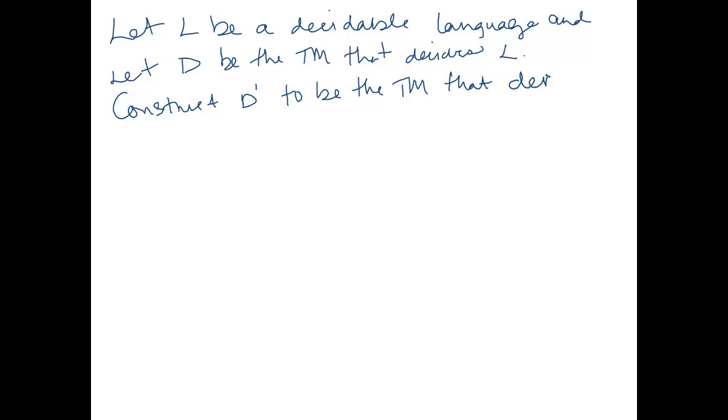L complement. Okay, so what does D prime do? It says on input W, we know that D exists. D is the decider for L. We are going to run D on W. It's going to say yes, that string is in L. If D accepts W, reject. If D comes back and says yep, W is in L, then we say okay, then it's definitely not in L complement.